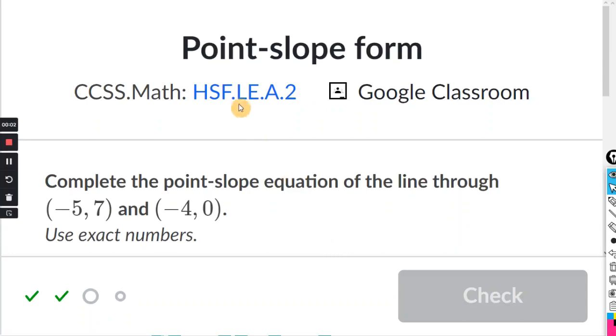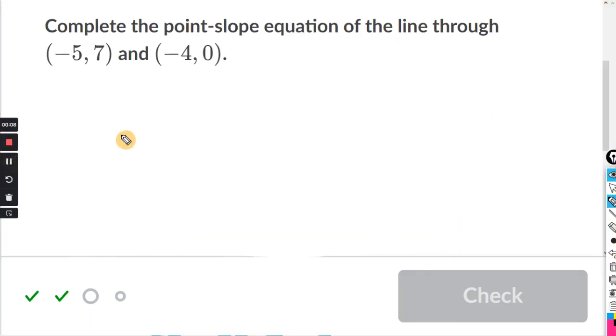This will be for the Khan exercise point-slope form. So the equation for point-slope form, that is going to be y minus y1 equals m times x minus x1.